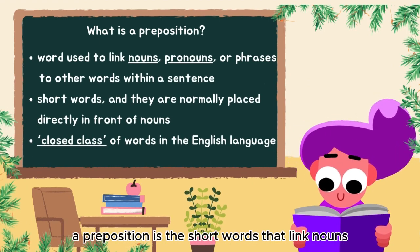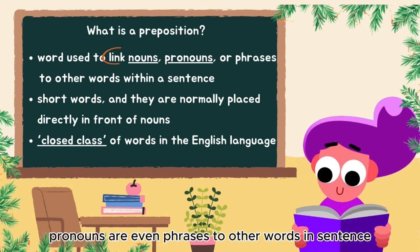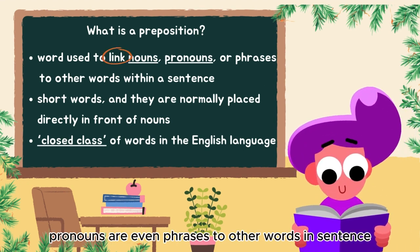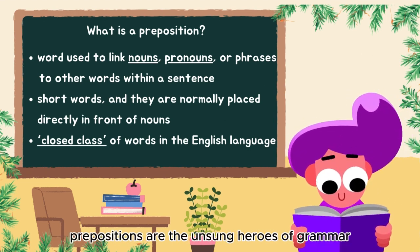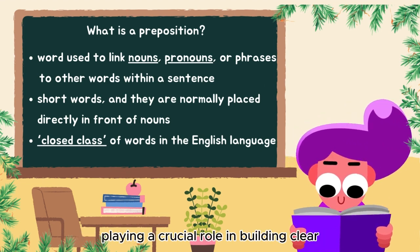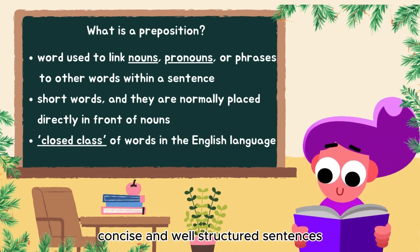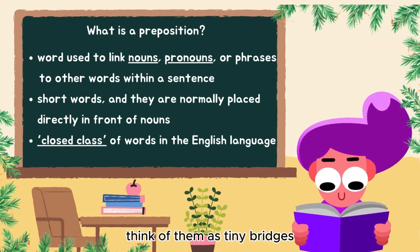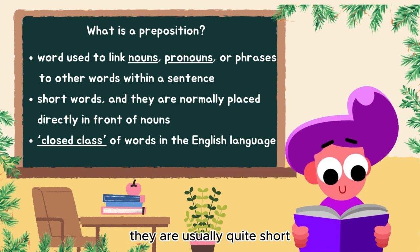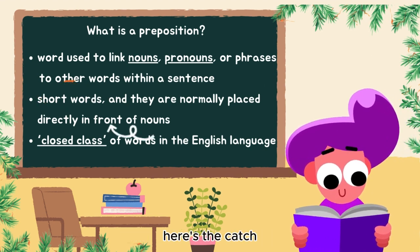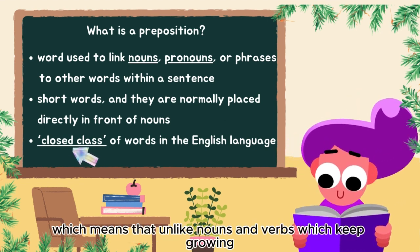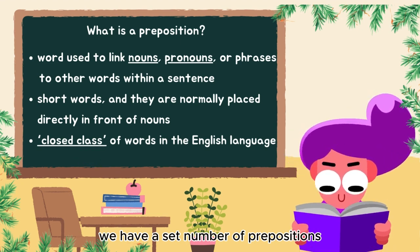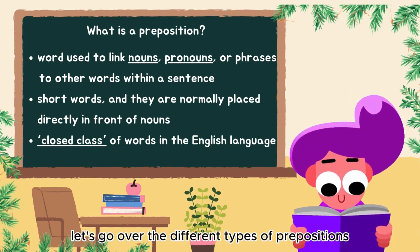So, what is a preposition? A preposition is a short word that links nouns, pronouns, or even phrases to other words in a sentence. Prepositions might seem tiny, but don't be fooled by their size — they are the unsung heroes of grammar, playing a crucial role in building clear, concise, and well-structured sentences. Think of them as tiny bridges helping ideas flow smoothly. They usually sit right in front of a noun. Prepositions are a closed class in English, meaning unlike nouns or verbs, we have a set number of them.